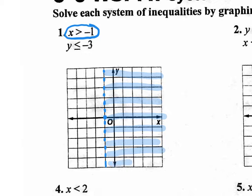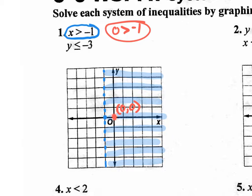You don't have to use the shortcut — you could test the point (0, 0). Plug in 0 for x: zero is greater than negative one, and that's true. That's why you shade in that side. But the shortcut is simpler: greater than is to the right, less than is to the left. This says greater than, so shade to the right.